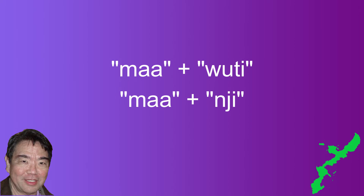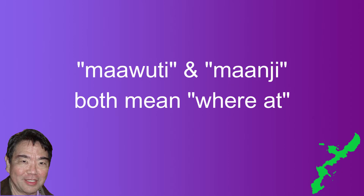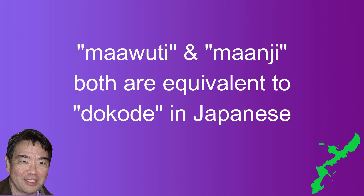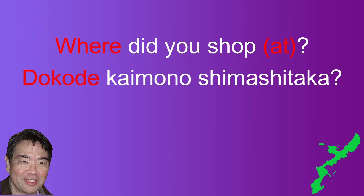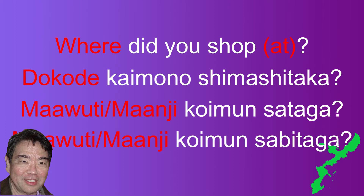The next example is "ma" used with the sentence particles "uti" and "inji," which we covered in video 45. "Ma uti" and "manji" both mean "where at," equivalent to Japanese "doko de." The example is "where did you shop?" In Japanese: "doko de kaimono shimashita ka." In Uchinaguchi: "ma uti koimung sataga" or "manji koimung sataga" in casual form, and "ma uti koimung sabitaga" or "manji koimung sabitaga" in polite form.